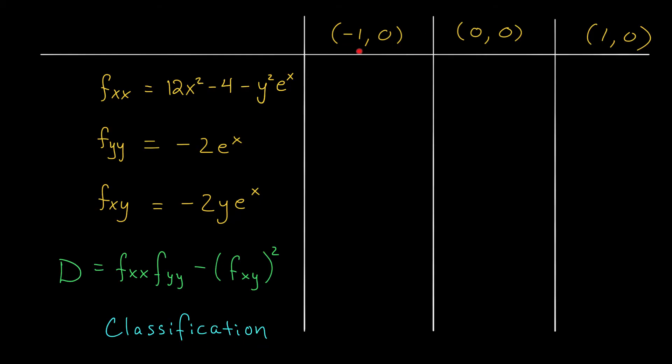So I'm going to start by plugging in minus 1, 0 to the expressions on the left. When I plug it into this first term, I get 12 times minus 1 squared. That's 12 minus 4. That's 8. And now minus 0 squared e to the x. So I have a value of 8.